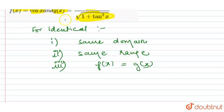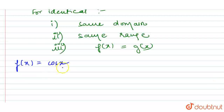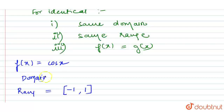Let us find out the range and domain for the two functions. The first function is f(x) = cos x. We know that the maximum value of cos x is 1 and the minimum is minus 1, so the range is from minus 1 to 1, closed bracket. The domain can be any real number — cos x is defined for any real number.